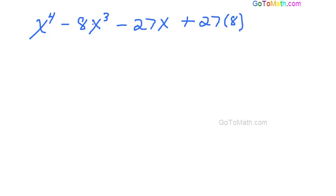So this becomes x minus 8. And let's say we factor out a negative 27. So this becomes x minus 8. See that?